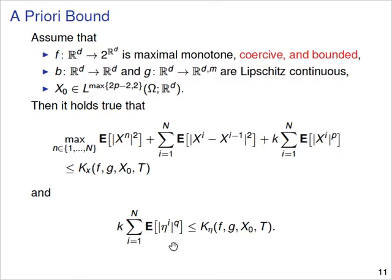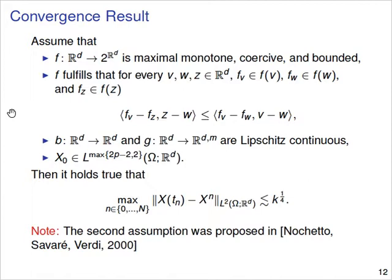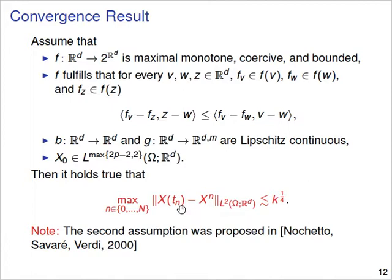We can prove a convergence result: if f is maximum monotone, coercive and bounded, and additionally fulfills an angle boundedness condition, and b and g are Lipschitz continuous with an integrable initial condition, then we get a rate of convergence of 1/4 for this problem. The angle boundedness condition was first proposed by Nochetto, Savari, and Verdi in 2000 for a deterministic problem, and is fulfilled, for example, if f is the subgradient of a convex potential.